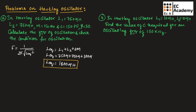Therefore, the frequency of oscillation can be written as 1 / (2π √(1800 µH × 150 pF)). If we solve this, we will get the frequency of oscillation as 306.25 kHz.